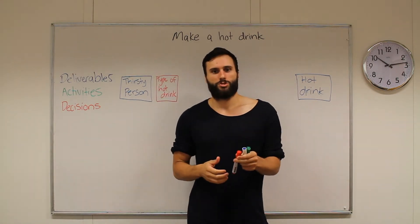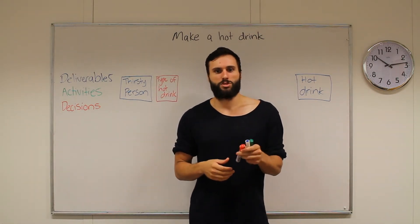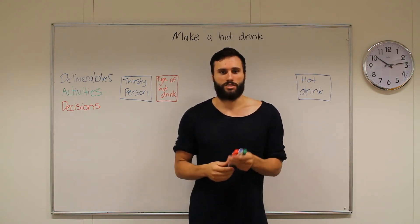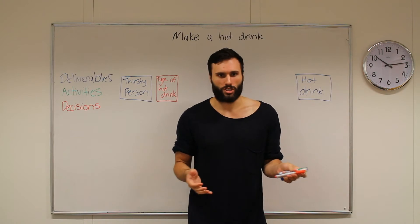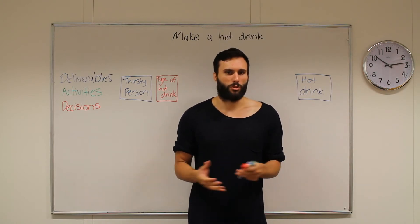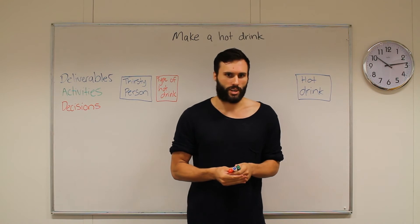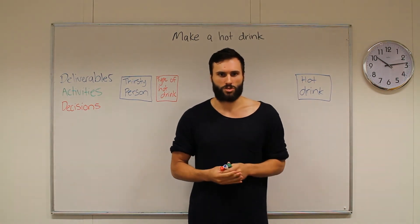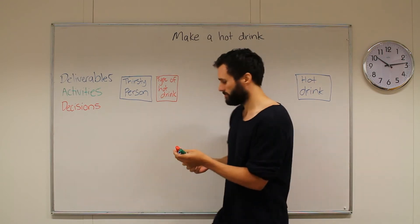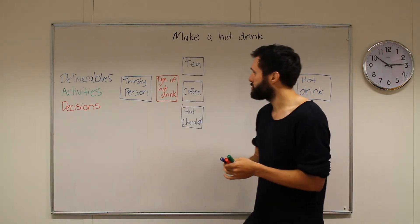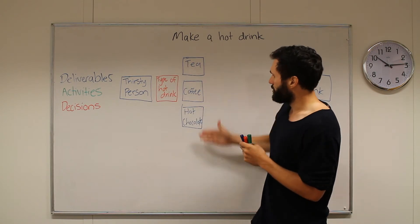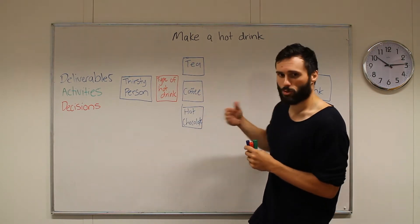You can then choose your deliverables. For the purposes of this, there are only three hot drinks being considered: tea, coffee, or hot chocolate. You could get a lot more specific with a lot more deliverables, but we will stick with those three here. So we will draw up three boxes — one with tea, one with coffee, and one with hot chocolate. We have our deliverable, we have our decision, and then the decision comes to these three deliverables.